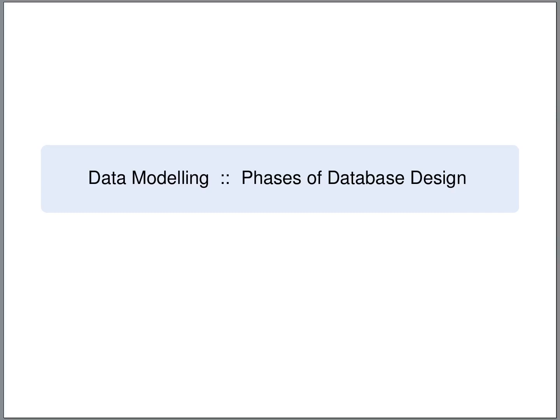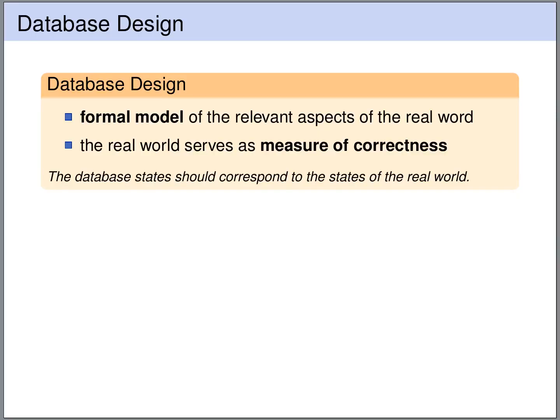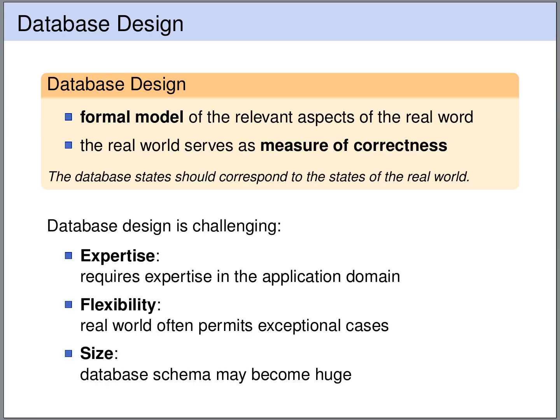First, let's get an overview of the phases of database design. As we've already discussed, the goal of database design is to create a formal model of the relevant aspects of the real world. In this process the real world serves as a measure of correctness. The database states that our design permits should correspond to states of the real world. Such a database design is really challenging because it requires expertise in the domain that we are modeling.